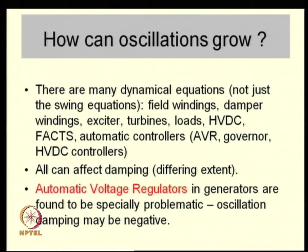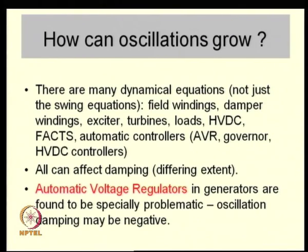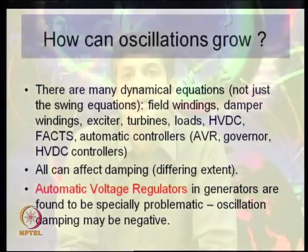You have dynamical equations for field winding fluxes, damper winding fluxes, the exciter, turbines, loads, control systems, AVR, governors, HVDC controllers, and flexible AC transmission system controllers — all power electronic controllers present in many power systems. All of them can affect damping to a different extent. Closed-loop control systems like the automatic voltage regulator in generators are often the cause of poor oscillation damping. Any control system that is poorly designed can result in a particular mode or eigenvalue becoming unstable.